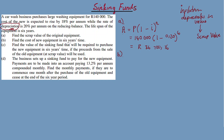Now for part B: find the cost of new equipment in six years' time. Here inflation kicks in. We use the compound interest formula: A = P(1 + i)^n. The purchase price today is R140,000; the inflation rate is 18% per annum, so i = 0.18; and n = 6 years.